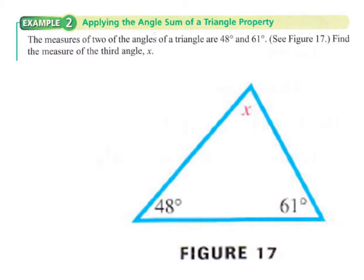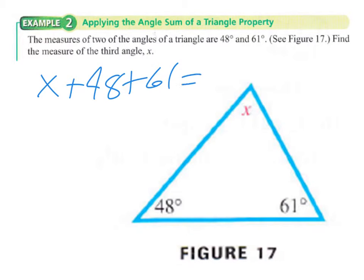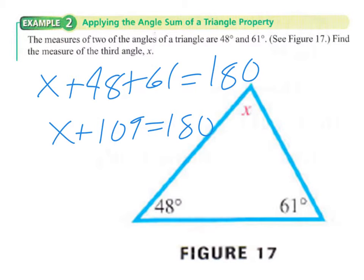In this example, a triangle is labeled with 48 degrees, 61 degrees, and x. We need to find the measure of the third angle x. We write the equation: x + 48 + 61 = 180, which simplifies to x + 109 = 180. Subtracting 109 from both sides gives x = 71 degrees.